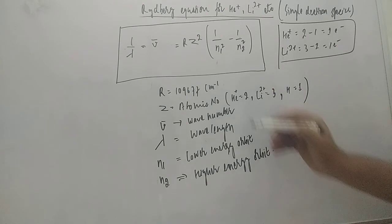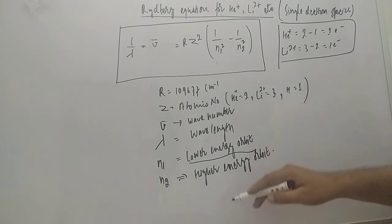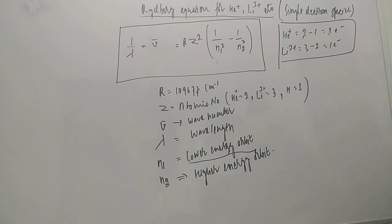ν̄ (nu bar) is equal to wave number. Lambda is the wavelength. n₁ is the lower energy orbital where it is falling down, and n₂ is the higher energy orbital from where it is going to fall.